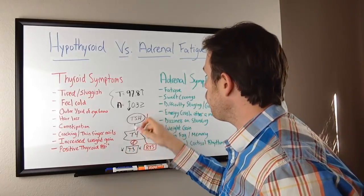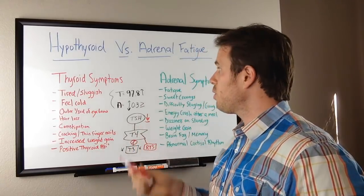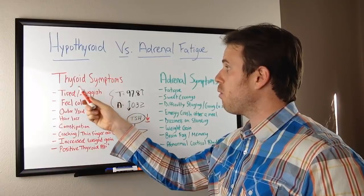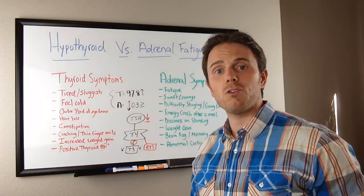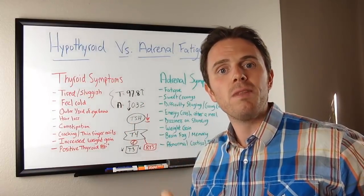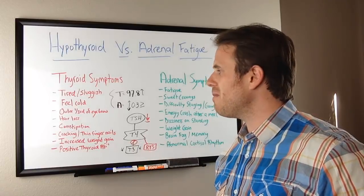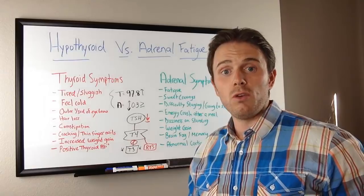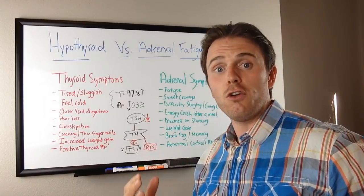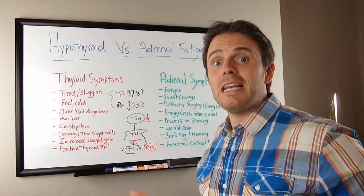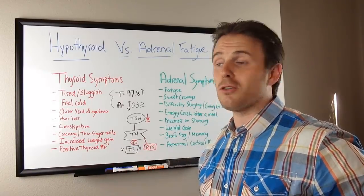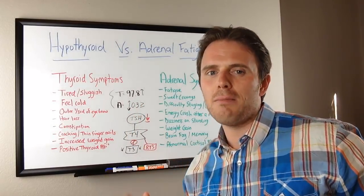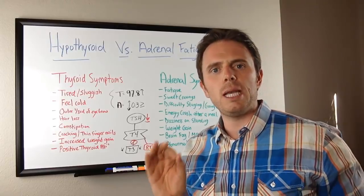That's why doing a full thyroid panel — looking at both thyroid markers and adrenal markers together — is the best approach. With more difficult cases, you may also find a chronic infection interfering. Remember, when you get sick or get the flu, your body temperature can go up, so some people may have relatively normal temperatures with a chronic infection masking the pattern. Keep that in mind.